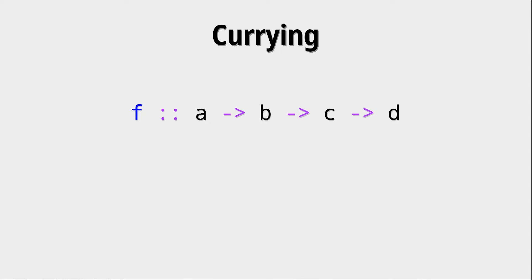If we have a function that for example takes three arguments and returns one value we could rewrite this as the following: a function that only takes a single argument a and returns a new function that again only takes a single argument, that returns a function that again only has one argument and then returns the final result.